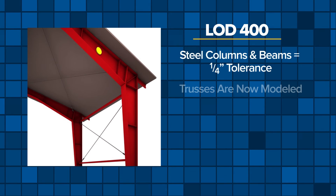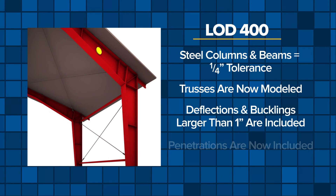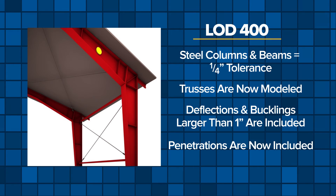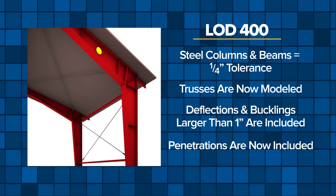At LOD 400, the shape of the tapered columns and beams are within a quarter-inch tolerance. Trusses are now modeled, beam deflection and column buckling larger than 1 inch are included, and penetrations are now included as well. Also, connection plates and members between primary and secondary steel elements are shown.